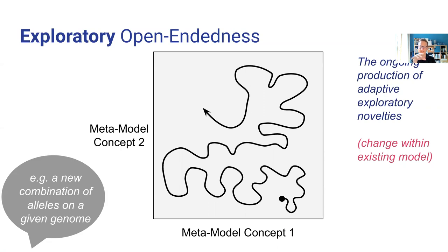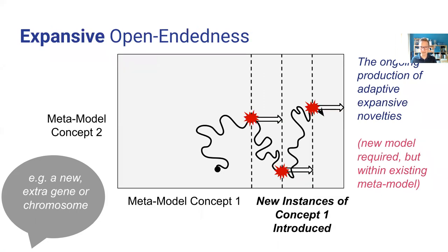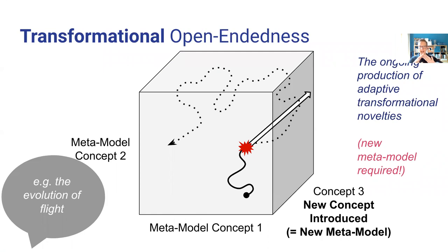For the purposes of this talk I just want to make the basic distinction between two different types of open-endedness. The first involves a continual search in a given search space, and the second I'm going to lump together as open-endedness that involves an expansion of the search space, opening up new possibilities that weren't previously available.